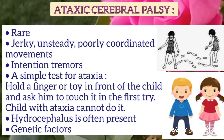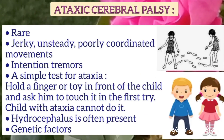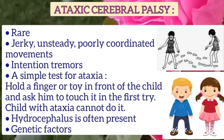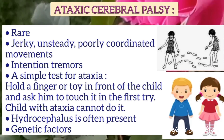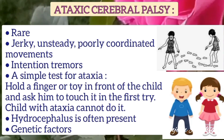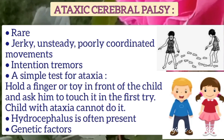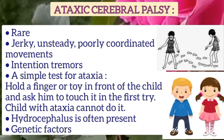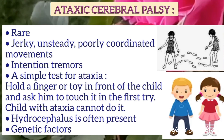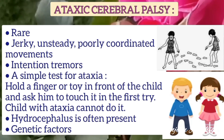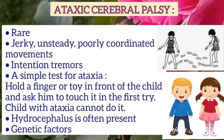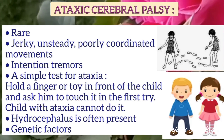Ataxic cerebral palsy is also rare. There are jerky, unsteady, poorly coordinated movements and intention tremors. A simple test for ataxia is to hold a finger or toy in front of the child and ask them to touch it — a child with ataxia cannot do it on the first try. Hydrocephalus may also be present, and ataxic CP is usually caused by genetic factors.